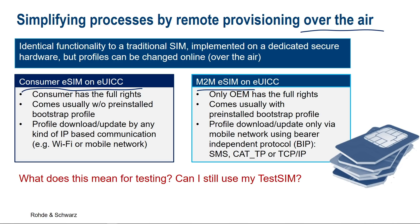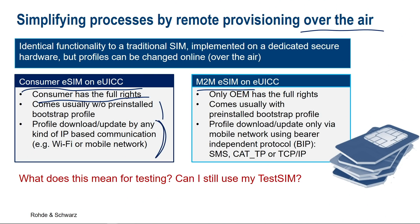For the consumer eSIM, because you are the owner of the device, you have the full rights about what kind of profile you would like to use and with which operator you would like to operate. Normally this comes with a pre-installed profile, but you can have a couple of interfaces to change or reload another profile when you activate your device. It could be any kind of IP-based communication. For the M2M eSIM, it's a little bit different. Only the OEM of the device has the full rights. It also comes with a pre-installed profile, but you can change this just via the mobile network — you can change the profile, download, update profiles — using, for example, SMS service for this. So that's the key difference between consumer eSIM and M2M eSIM to keep in mind.